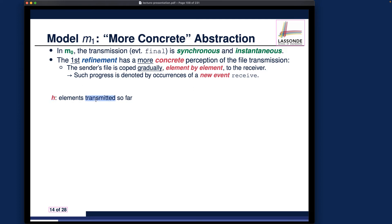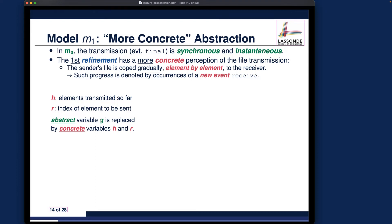So h represents the elements of the sender's file transmitted to the receiver so far. We also have variable r, which is more like an implementation concept — an index location indicating that the portion r is pointing to is ready for transmission, though it has not yet been transmitted to the receiver. The abstract variable g from M0 has not been replaced by the concrete variables h and r in a superposition sense — superposition means reusing inherited variables, but here we are no longer manipulating g.